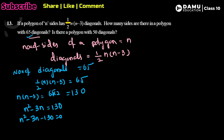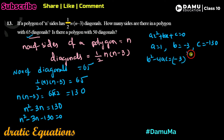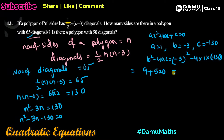We compare this with the standard form ax² + bx + c = 0, where a = 1, b = −3, and c = −130. Then b² − 4ac = (−3)² − 4(1)(−130) = 9 + 520 = 529.